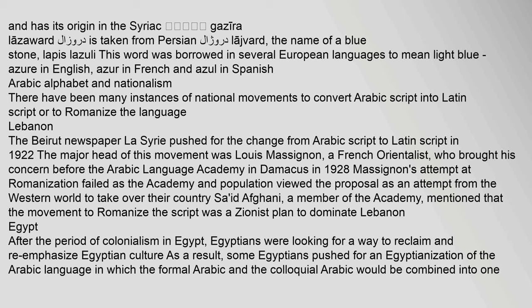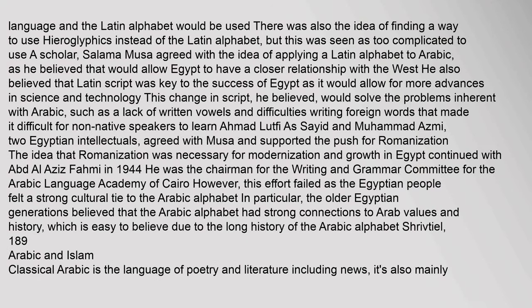There have been many instances of national movements to convert Arabic script into Latin script or to romanize the language. In Lebanon, the Beirut newspaper La Syrie pushed for the change from Arabic script to Latin script. In 1922, the major head of this movement was Louis Massignon, a French orientalist, who brought his concern before the Arabic language academy in Damascus in 1928. Massignon's attempt at romanization failed as the academy and population viewed the proposal as an attempt from the Western world to take over their country.